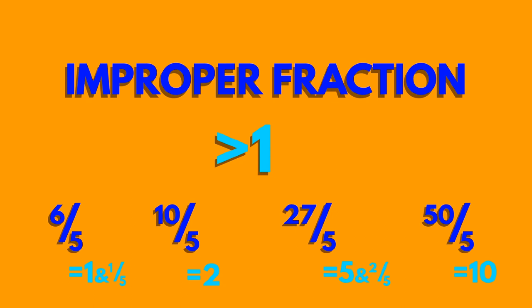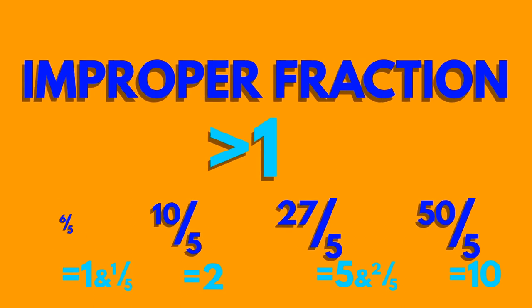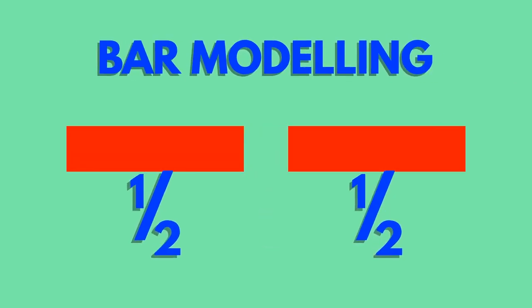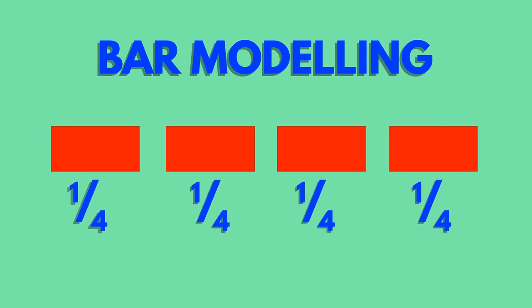When converting between fractions, decimals and percentages, a useful method to adopt is bar modelling. This is simply representing quantities and proportions as rectangles that get divided into halves, thirds, quarters and so on.